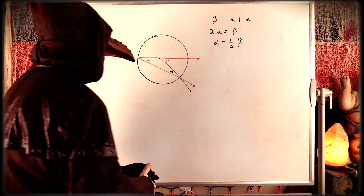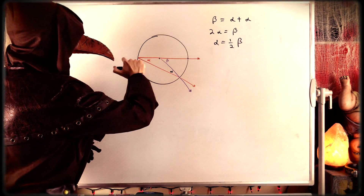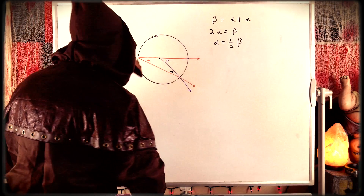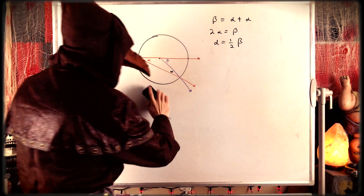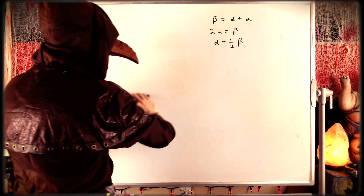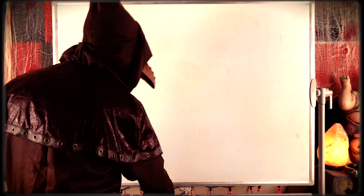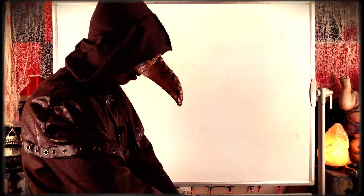That is case 1, where a side of the inscribed angle passes through the center of the circle. Conveniently, we will be able to use this first case to prove the next two cases without much trouble at all. So let's get into case 2.